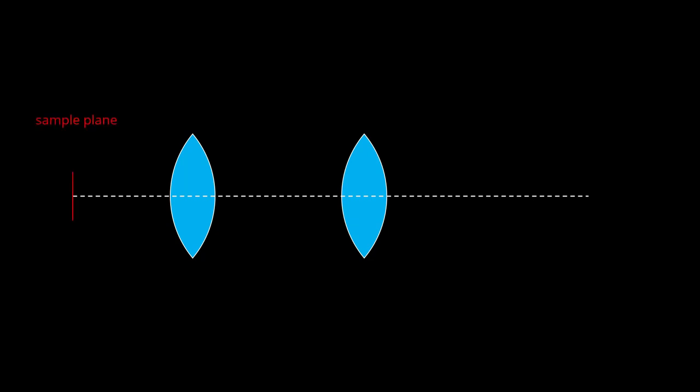A microscope creates an image of a sample in the sample plane in the image plane. What if we want to image more than one image plane at the same time though?